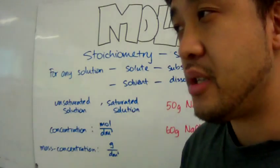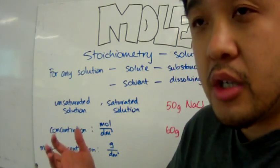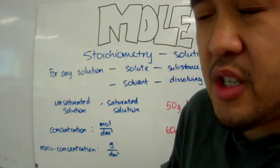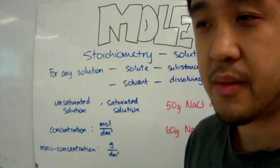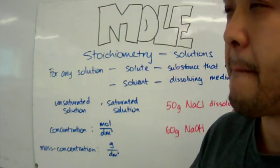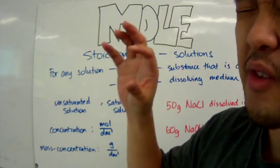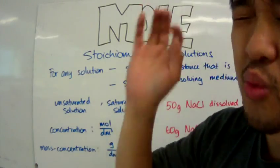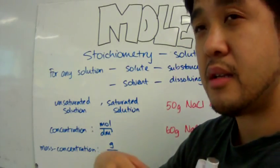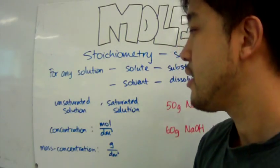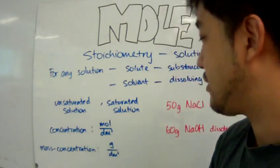There is a relationship between the solubility of a solution and temperature or pressure. If you increase the temperature, you will be able to dissolve more solutes. For example, if you add salt into a small glass of water and the cup is half full of salt, not all the salt will dissolve — but if you heat that cup of water, more salt will get dissolved. There is also a relationship between pressure and solubility, but we won't go into that.